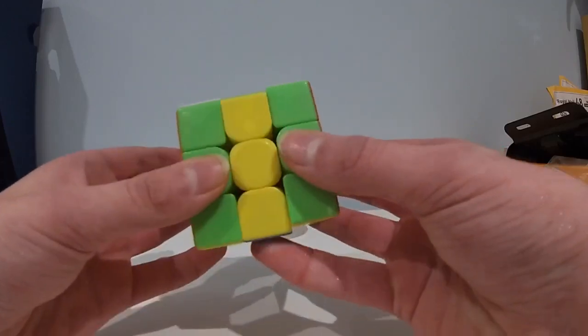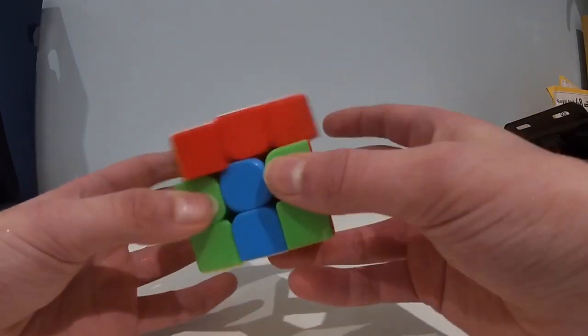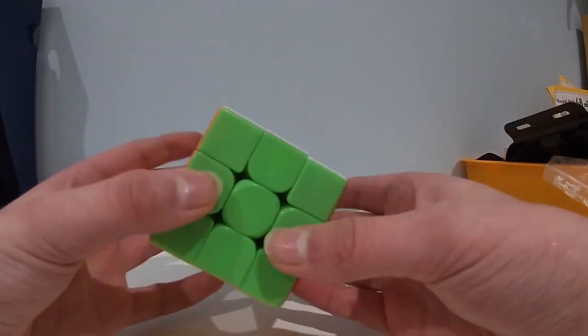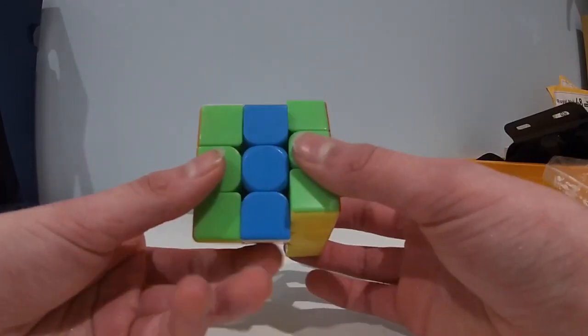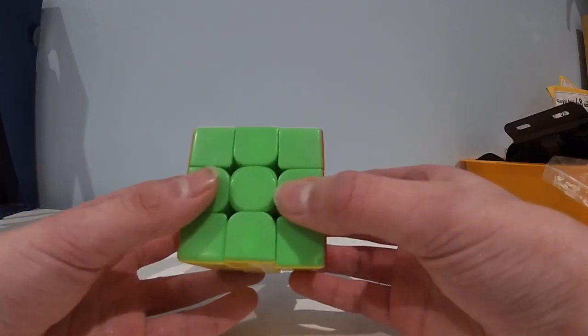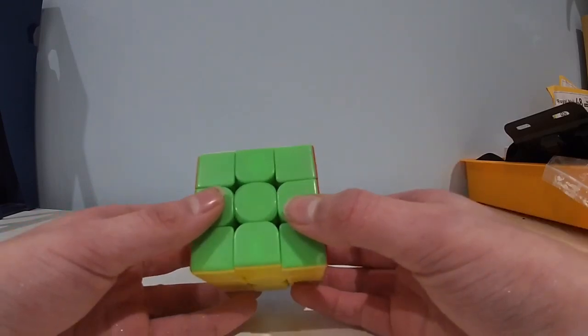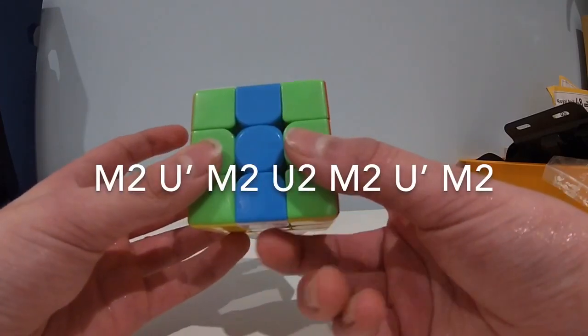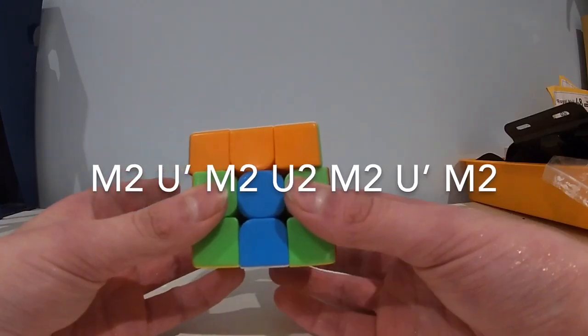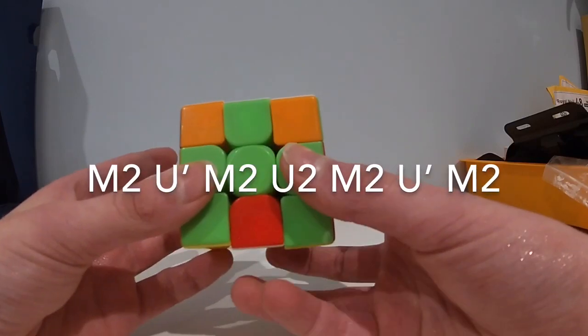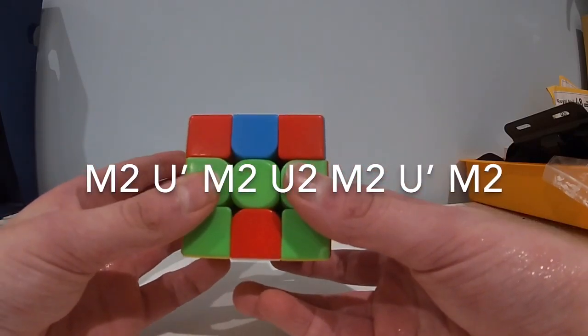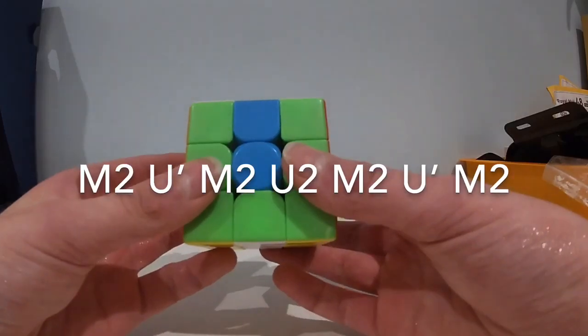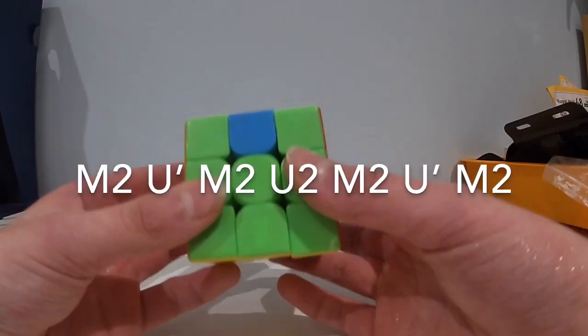Some people prefer it as you can go pinky ring and then U because you don't have your ring finger having to grip the back. For this reason, people often use their opposite hands for algorithms to do M's and U moves in the same algorithm. So for example in the H perm, the way I do it is I double flick with my right hand and then do a U prime with my left, double flick with my right hand, U2 with my left hand and double flick with my right hand and U prime with my left hand, and then a final double flick with my right hand.